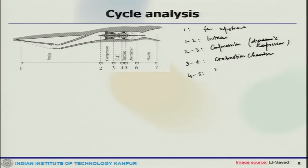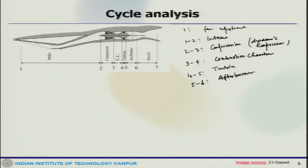From 4 to 5 is where turbine expansion takes place — hot gases are allowed to pass through the turbine. Then 5 to 6 is the afterburner, which is not necessarily always present; if it is there, the mixture gas coming out of the turbine can be further heated and more energy added. From 6 to 7 is the nozzle, which accelerates the flow to get the desired exit velocity.